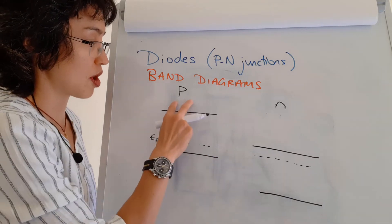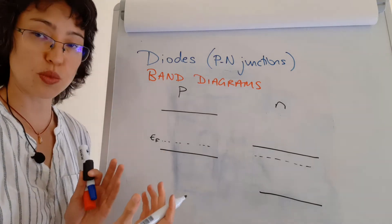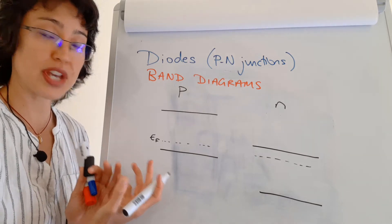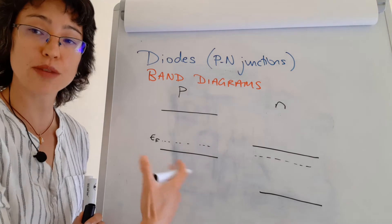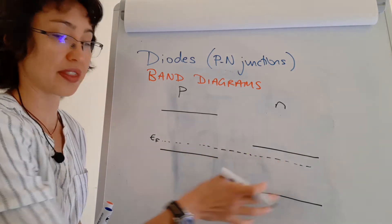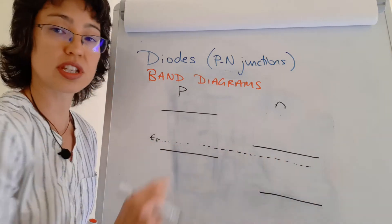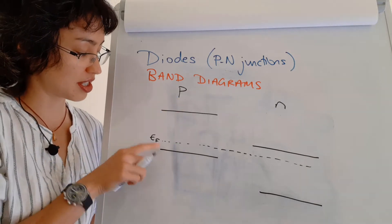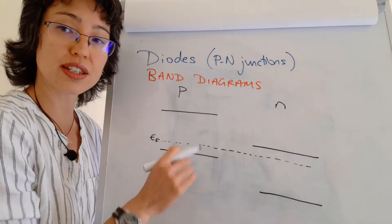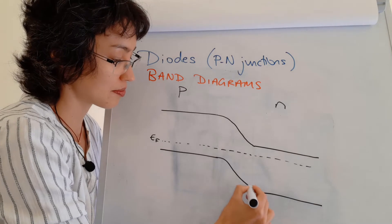This is what your band diagrams look like for P and N type semiconductors. Once you have a PN junction in equilibrium, the Fermi levels must be the same across the entire material. So the P-side is drawn higher and the N-side lower, with EF equal across the whole material, and to achieve this you get a bending of the bands at the junction.